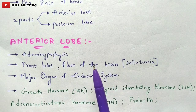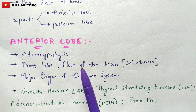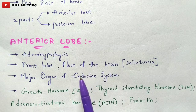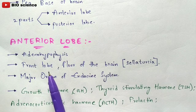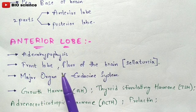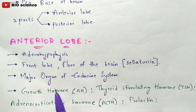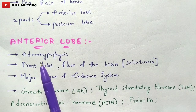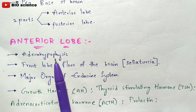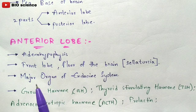The endocrine system is the collective group of organs responsible for the production of hormones. The anterior lobe is a major organ of the endocrine system because it performs a major and vital role in the production of a maximum number of hormones. So what are those hormones?